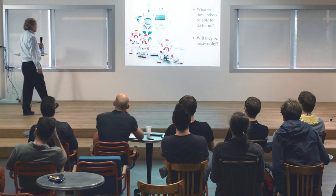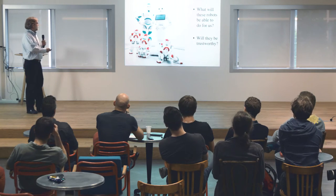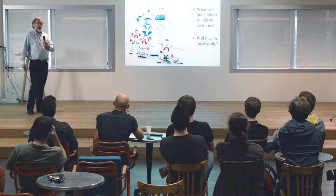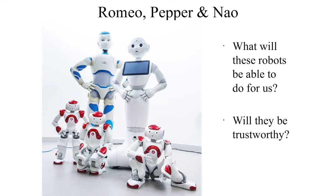I've admired Aldebaran robotics for many years and I've been very excited to see the progress that's taking place from Nao to Pepper to Romeo and beyond sooner or later, I can imagine. One of the things that I've been concerned about is as robots become more intelligent and more effective, what will it take to trust them?